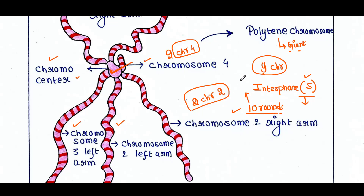After 10 rounds of DNA duplication, 2 to the power of N — that means 1024 sister chromatids — will be generated from every chromosome. Those 1024 sister chromatids remain together side by side. That's why each chromosome contains 1024 sister chromatids and looks huge under the microscope.